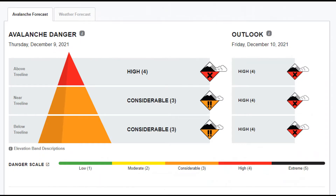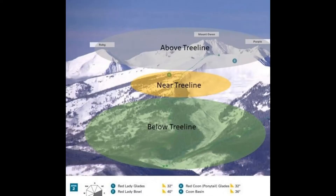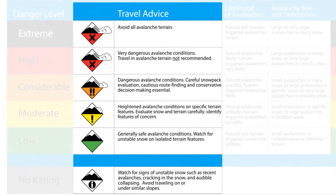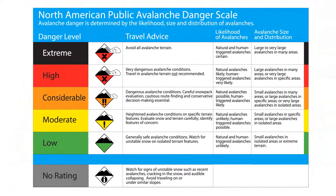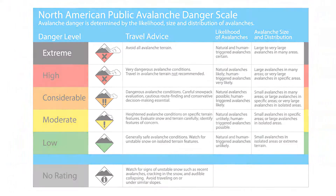We then provide a danger rating for each of three elevation bands — above, near, and below treeline. The danger rating uses a five-level danger scale based on travel advice, size, and likelihood of avalanches.